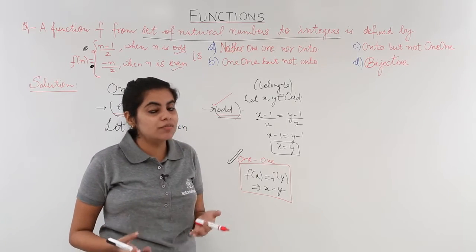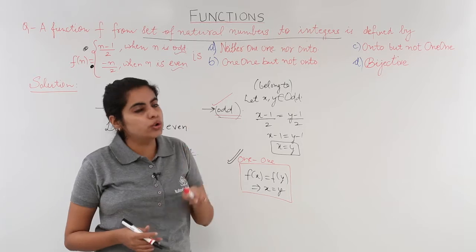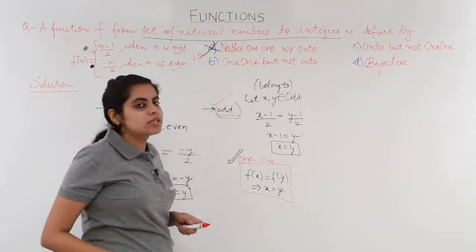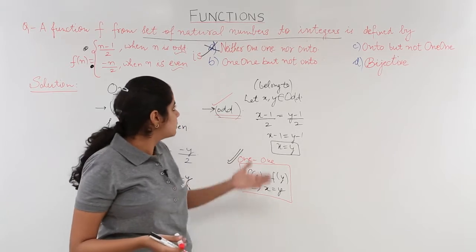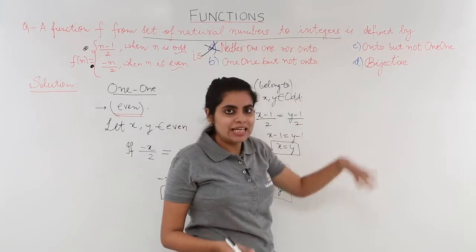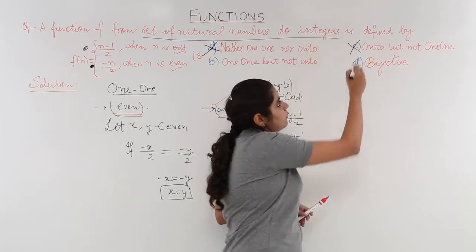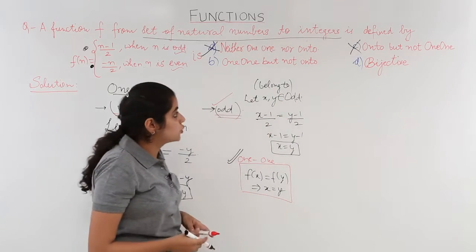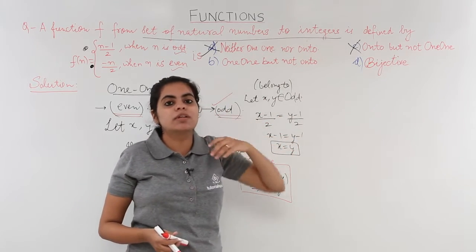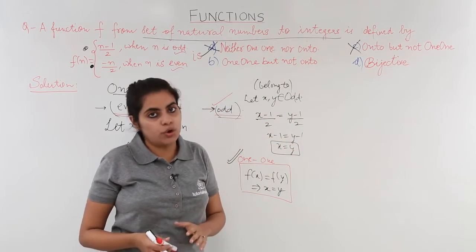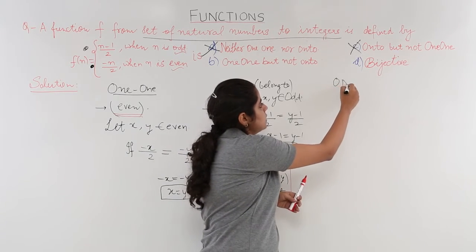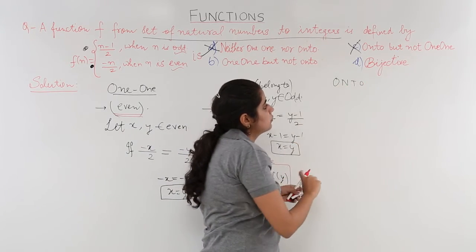But the story does not end here — I have to check onto as well to confirm bijectivity. Since the function is one-one, option A (neither one-one) and option C (not one-one) are cancelled. We are now checking between options B and D, so let's verify whether the function is onto.